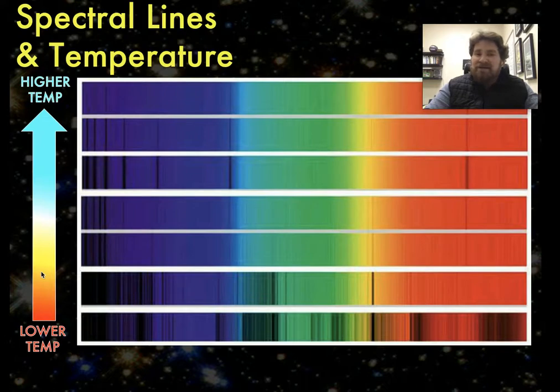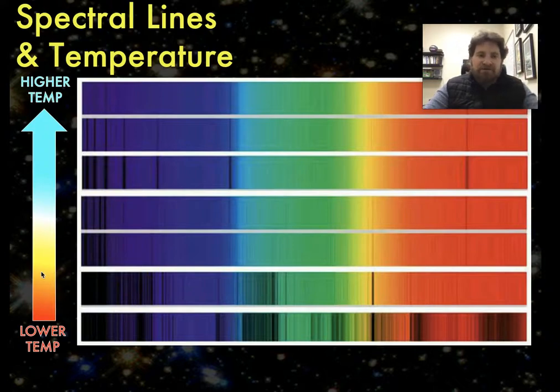And in fact, I can not only say that it's probably a bit cooler, I can accurately specify the temperature of that star based on the spectral lines that I can see.